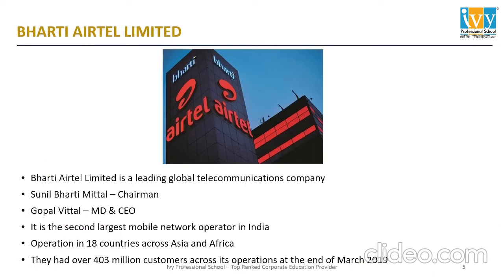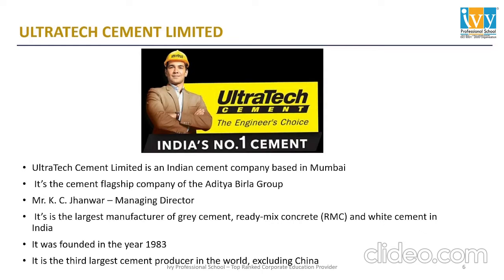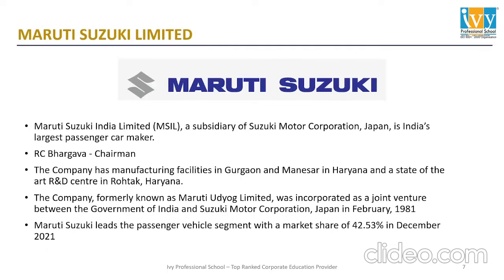Now I will give you a brief about the companies we are analyzing today. The first is Bharti Airtel Limited — it's the second largest mobile network provider in India, with 40.3 crore users as of March 2019. The next company is Ultratech Cement Limited, which is the largest cement producer in India and a flagship company of the Aditya Birla Group. The next company is Maruti Suzuki India Limited, India's largest passenger car maker, with a market share of 42.53% as of December 2021.